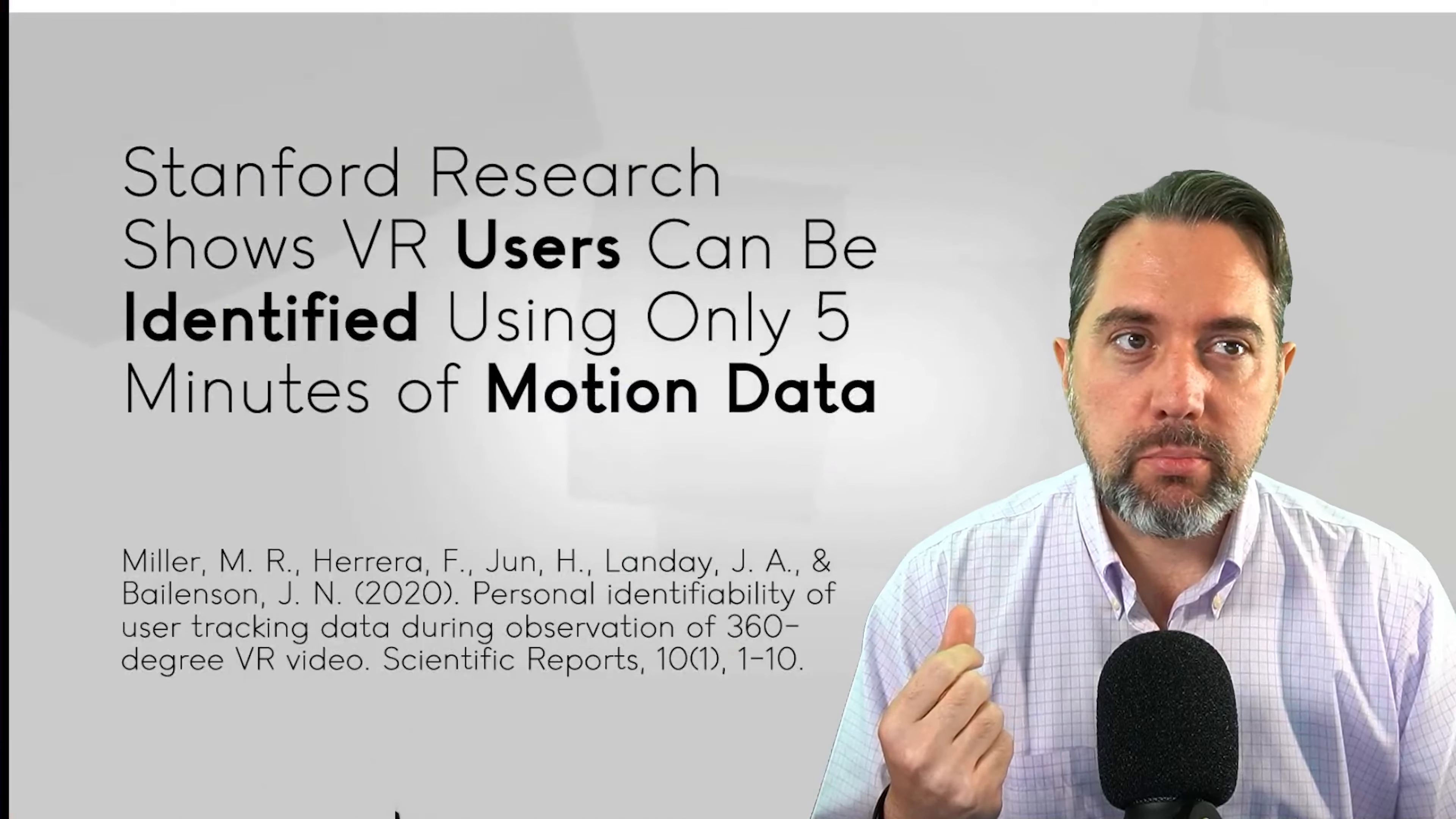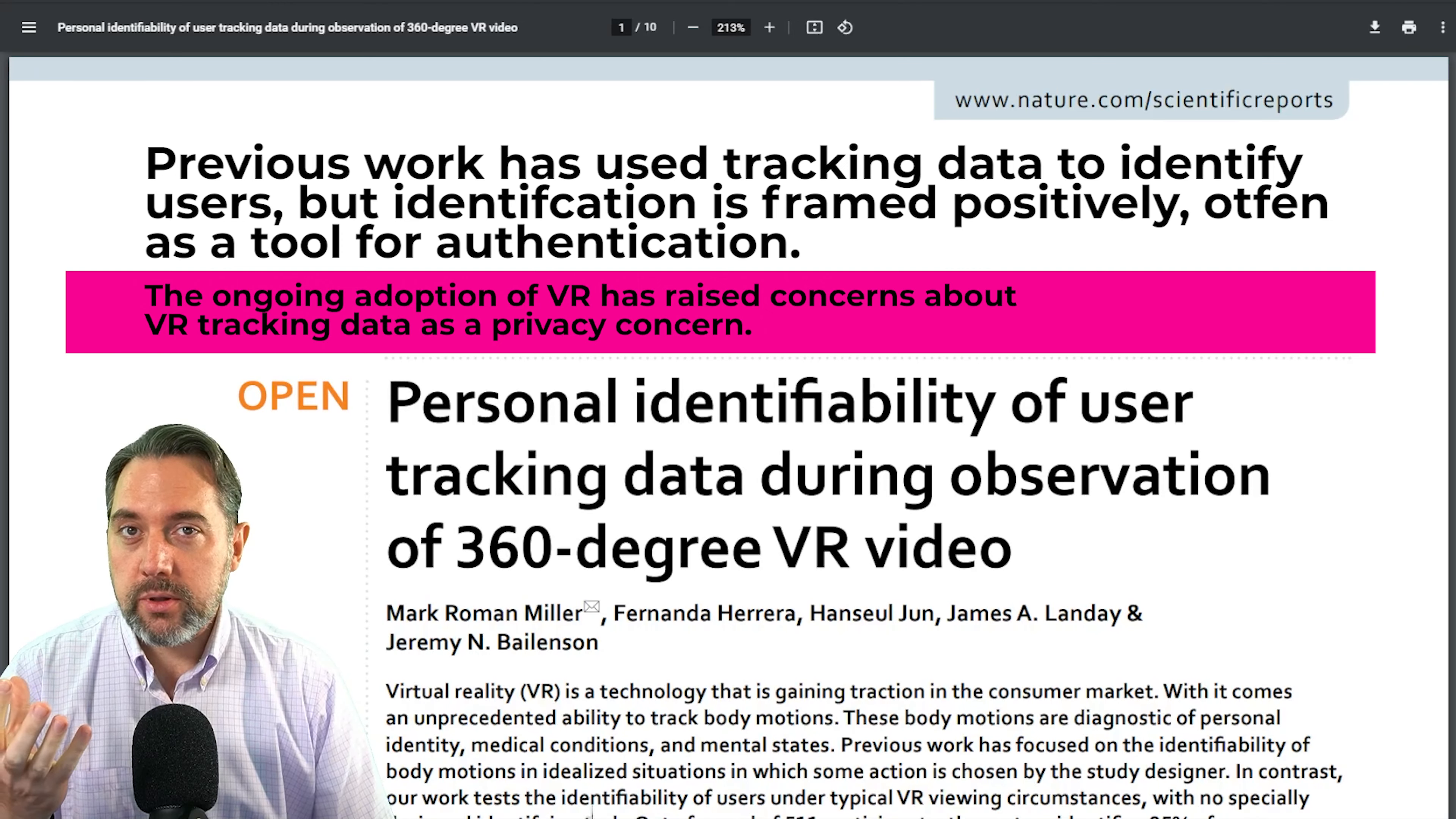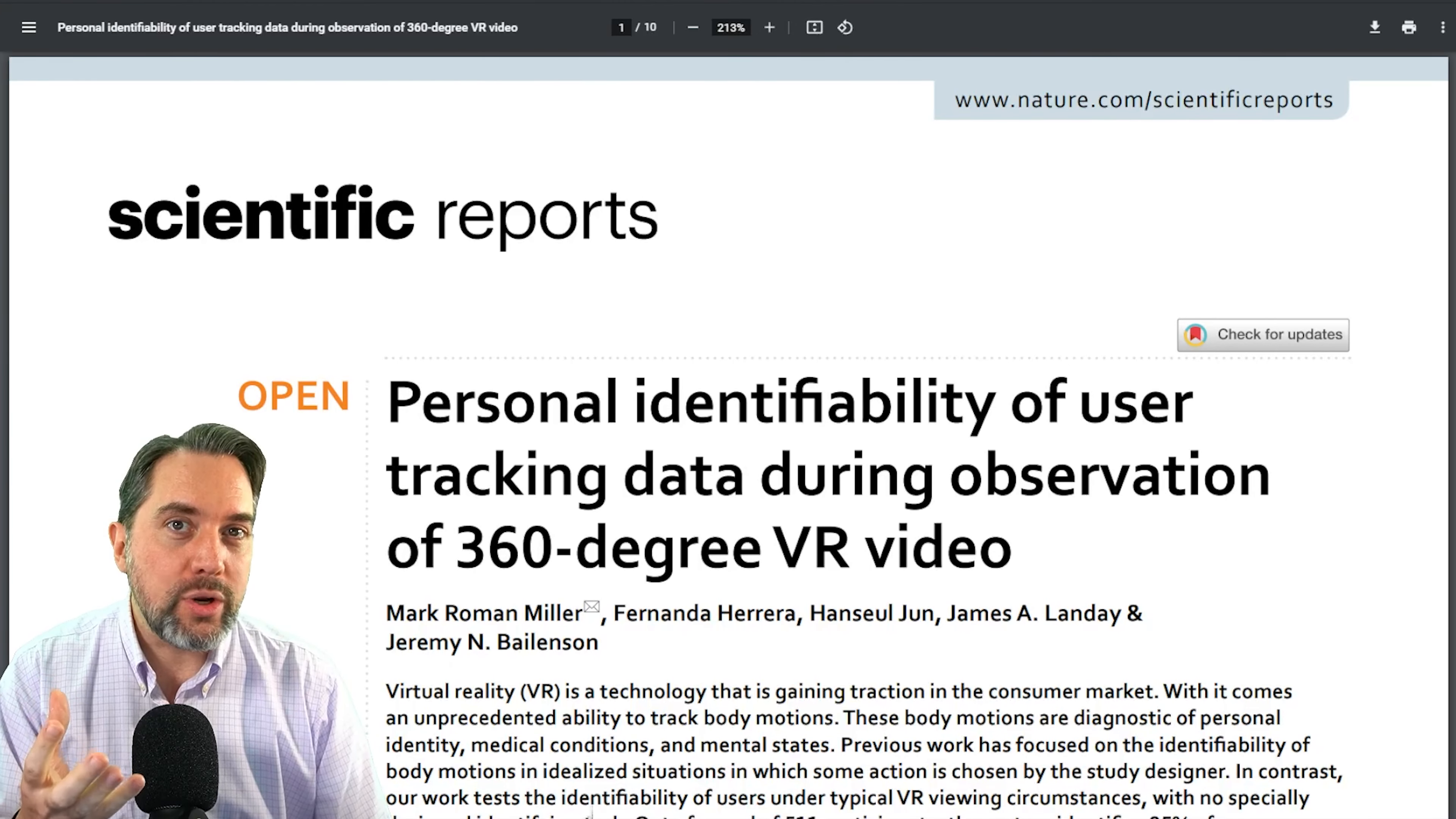And what I'm going to be referring to a little bit in this video is a study that came out of Stanford and published in Nature, a very reputable academic journal. The basic of this study is that they found that they could identify anonymous users of VR to a high degree, over 95 percent, just using the data extracted from interacting with 360 degree video and body movement that's being tracked to actually use virtual reality. So just using the data that's collected through normal interaction with VR, you're able to identify who is using it.